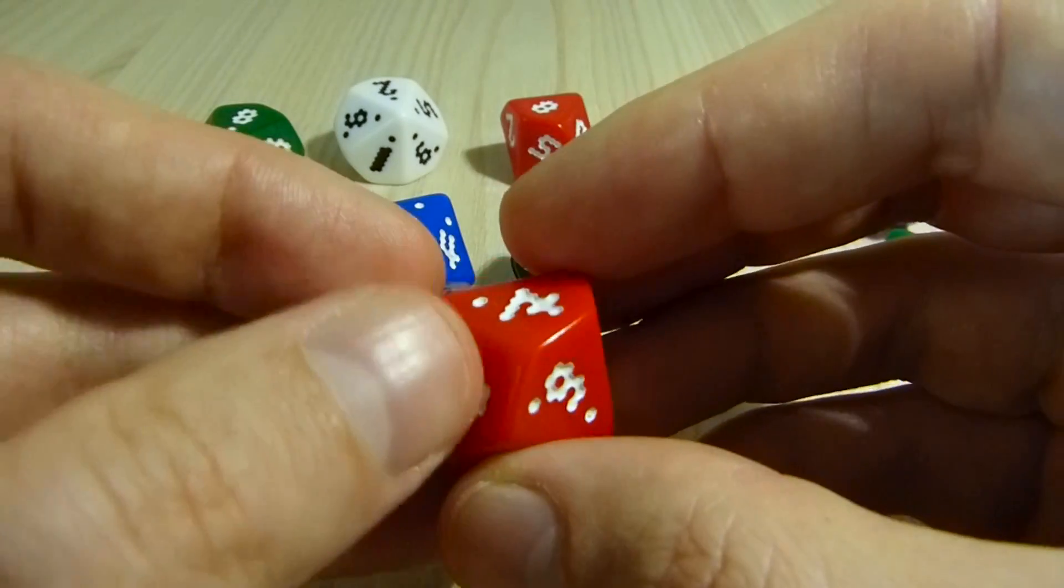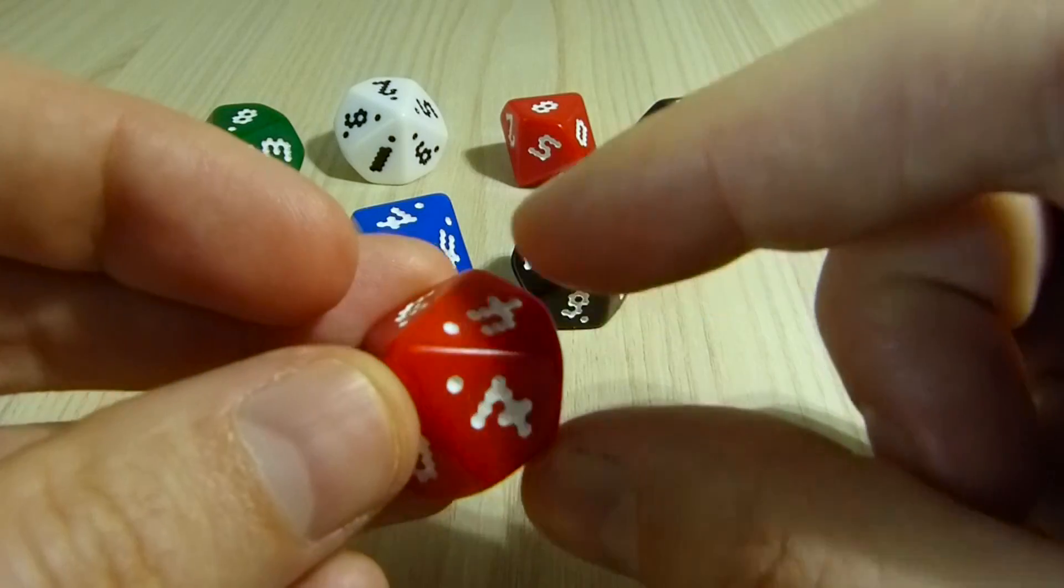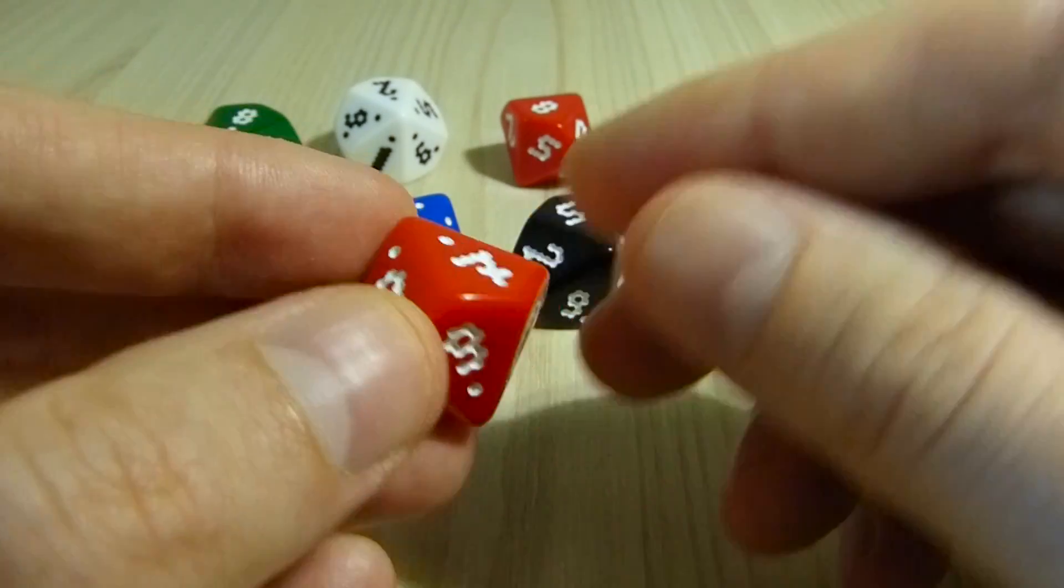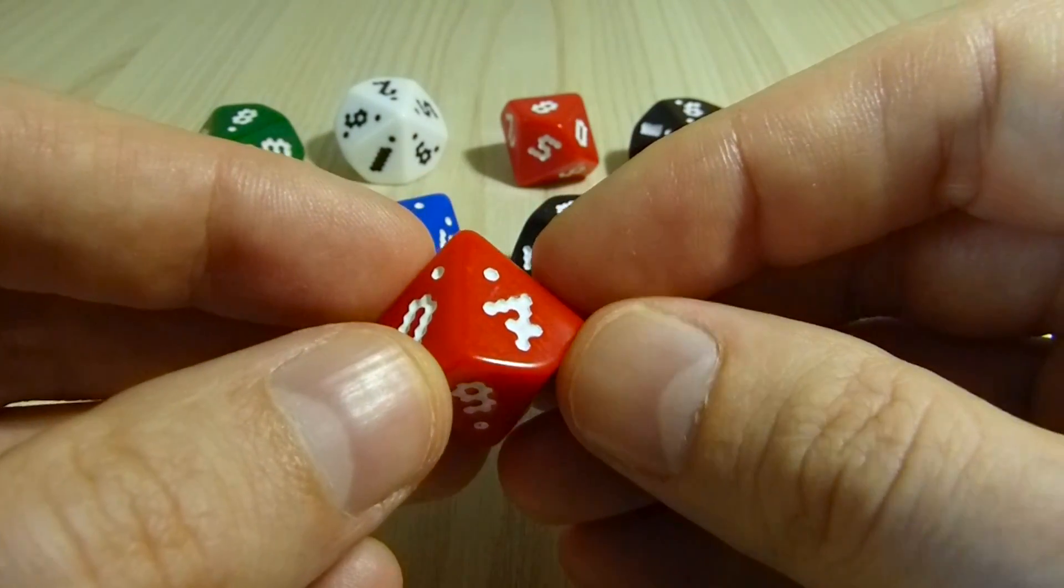The reason for that is if you squish a die down so it becomes more coin-like, then the two sides that are squished down are going to come up more often than the other ones. But at least if they add up to 9, then you're not rolling high and you're not rolling low.